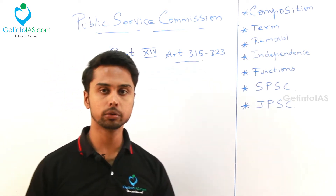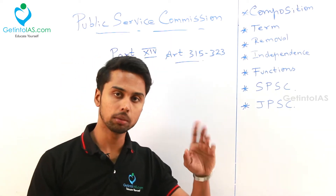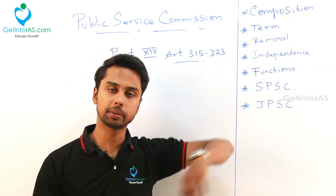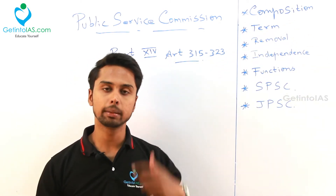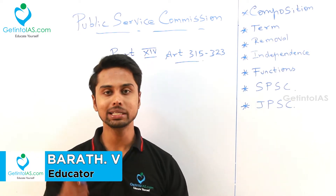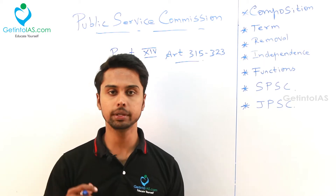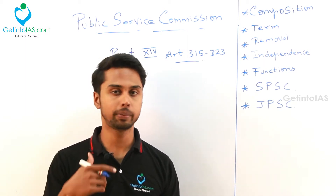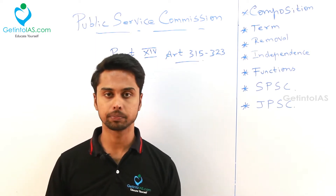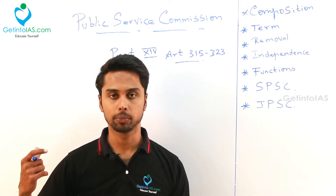First we will see about the composition. The composition is left to the president — the president will fix the strength of this Public Service Commission. As of now, there will be a chairman of UPSC and below that some members will be there. That number will be fixed by the president. Usually, there will be some 9 to 11 members plus one chairman of UPSC.